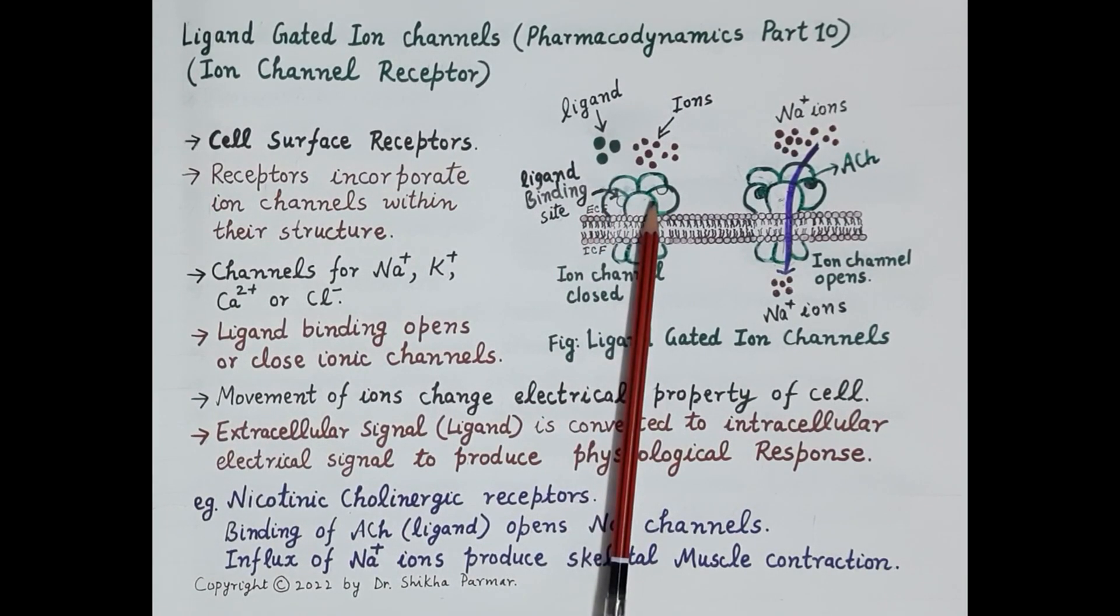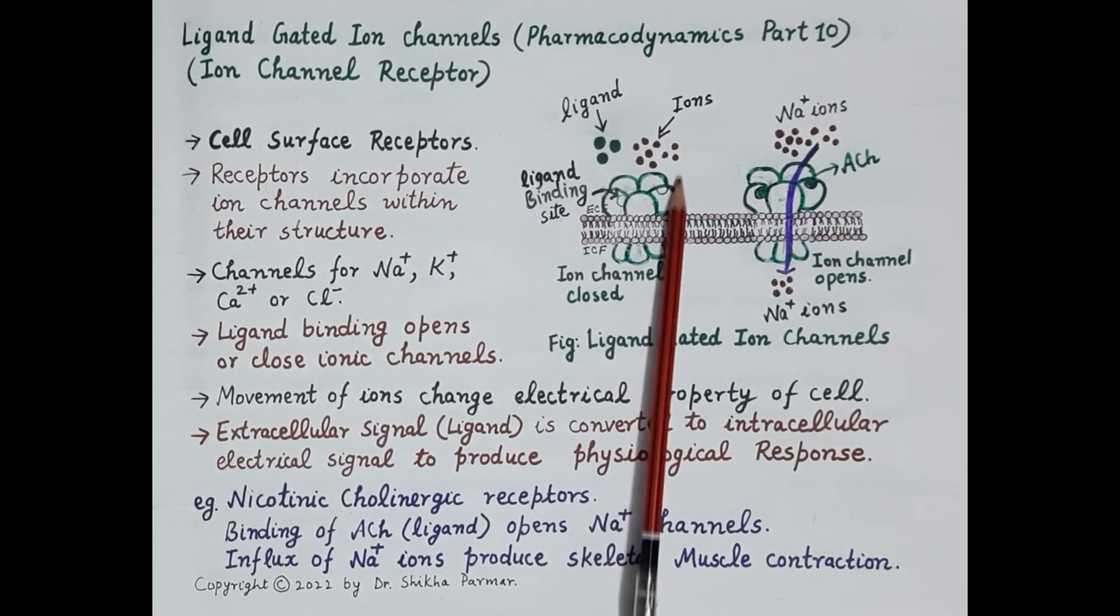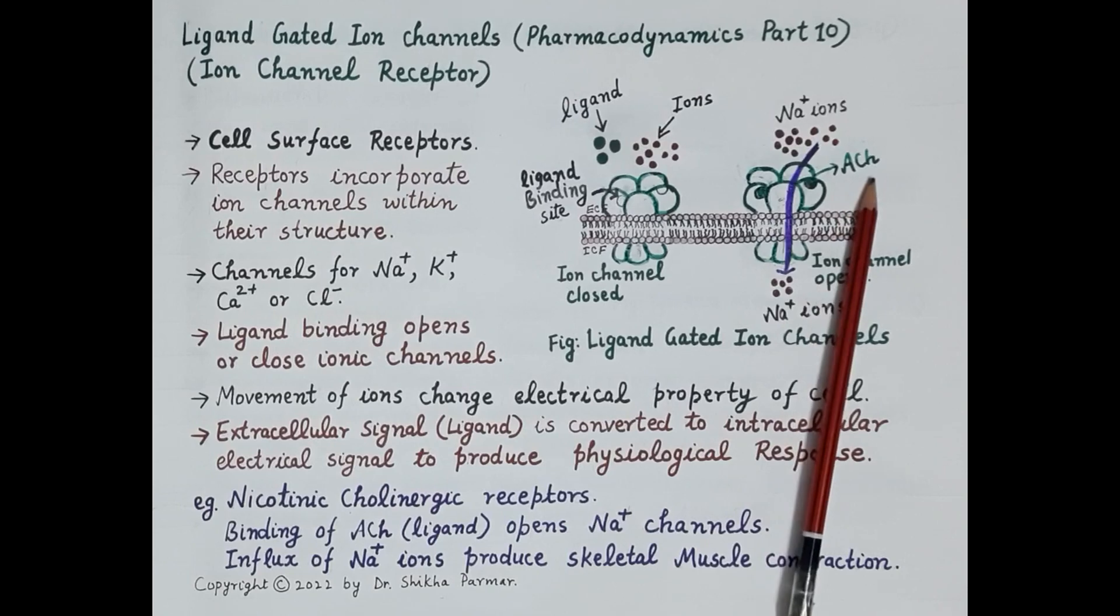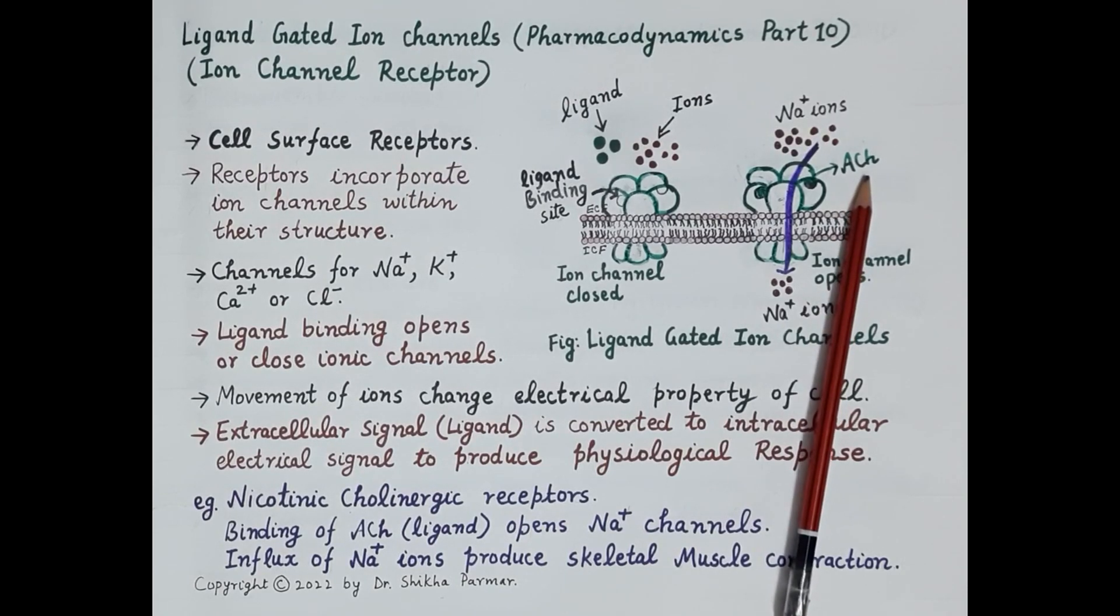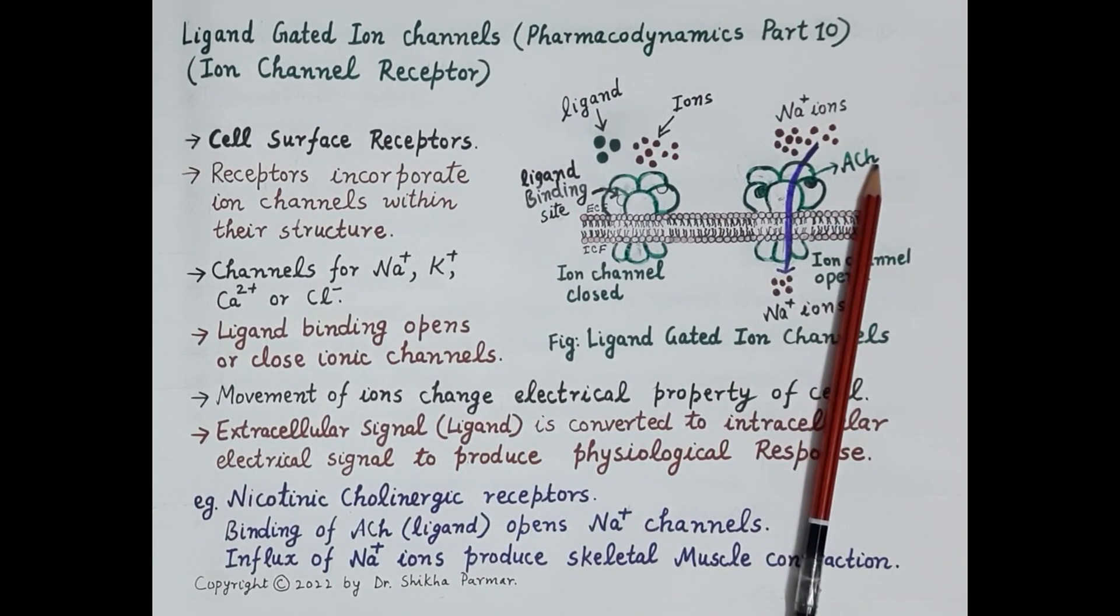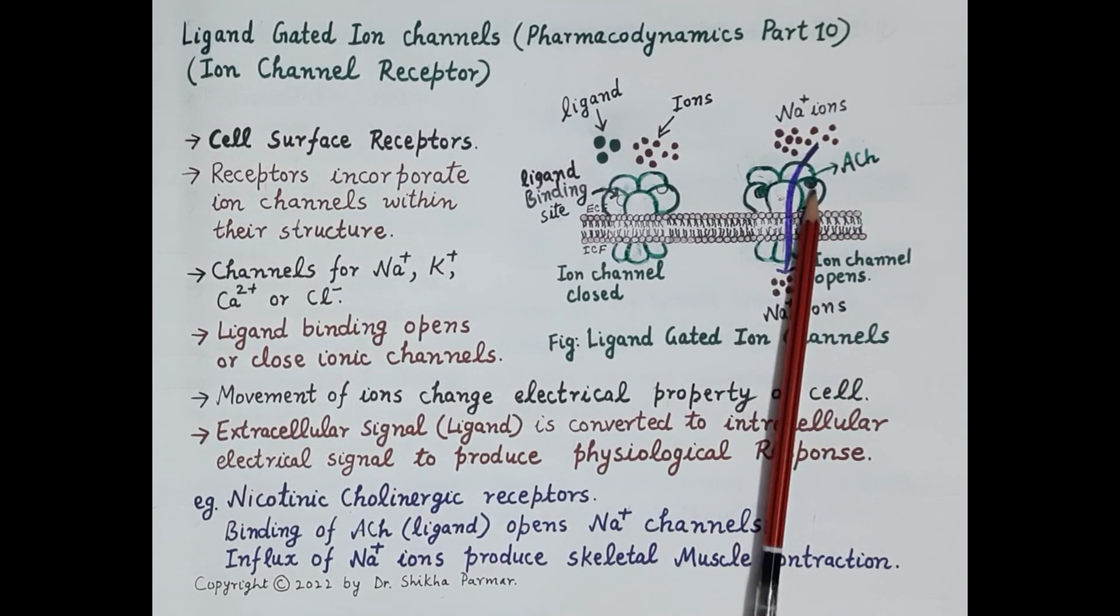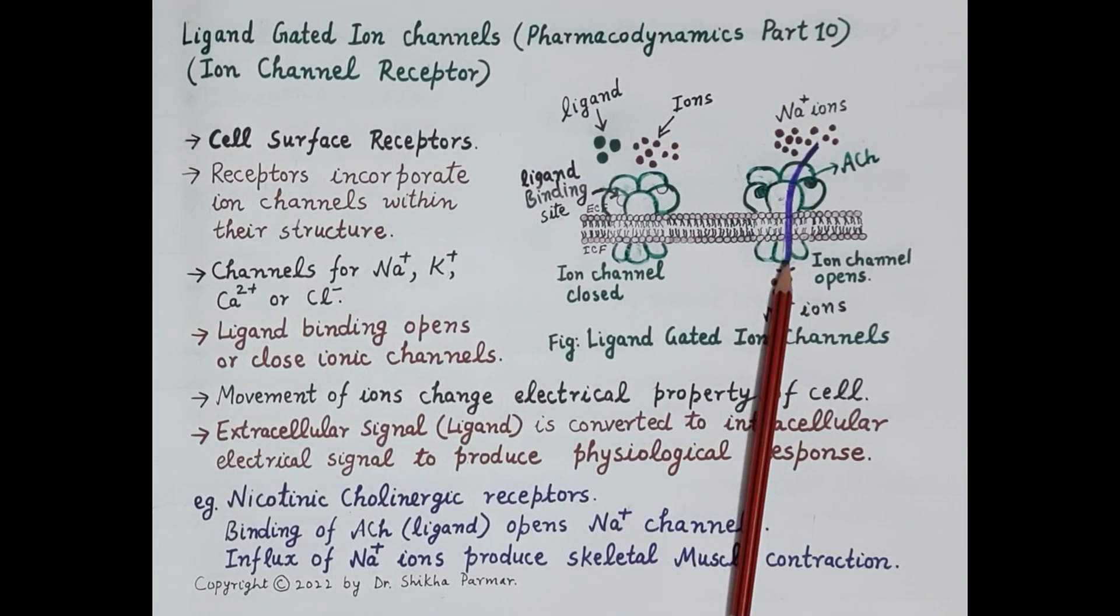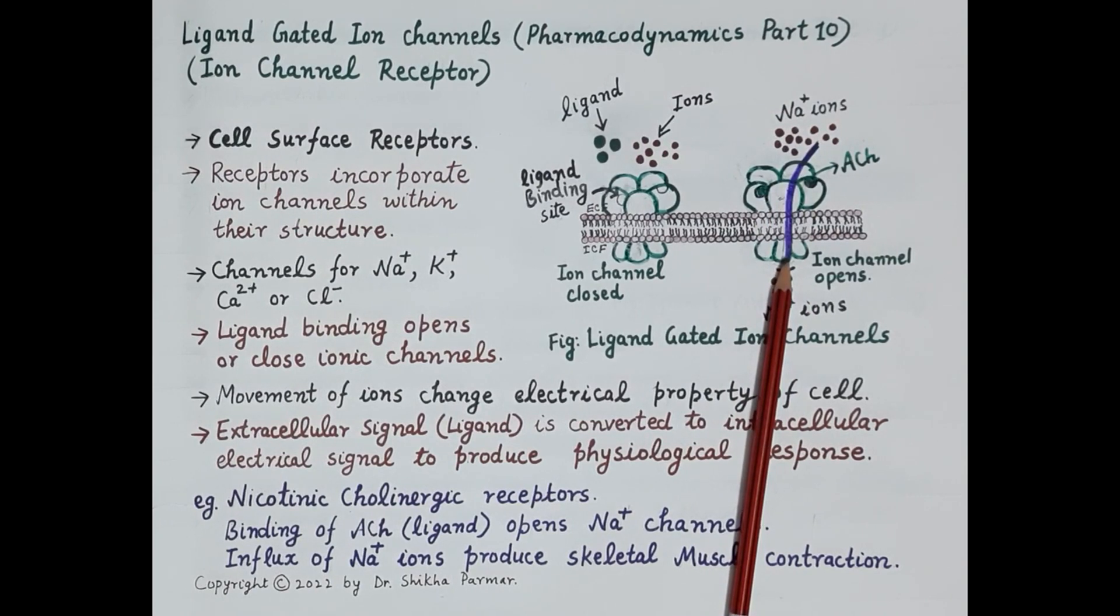Look at this figure. Here, acetylcholine is the ligand. It is a neurotransmitter, a chemical messenger, a signal that is received by the cell. Acetylcholine binds to nicotinic cholinergic receptors which are located at the neuromuscular junction.